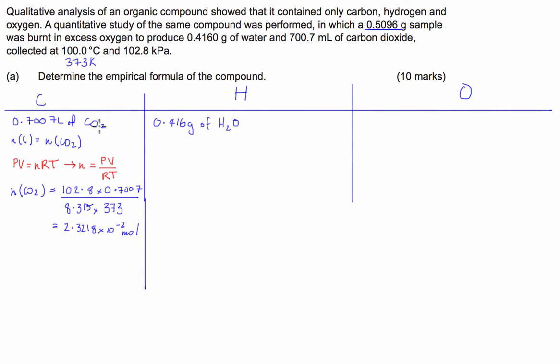Then what we're going to do is work out what the mass of carbon we have, because we need the masses so we can take it away from the original amount to find oxygen in the end. So the mass of carbon is just going to be equal to the number of moles times the molar mass of carbon. So it's going to be 12.01 times 2.3218 times 10 to the negative 2, and that we find is equal to 0.27885 grams.